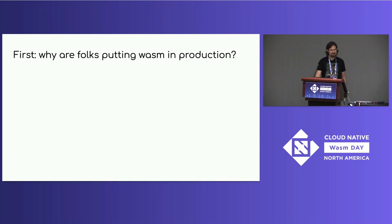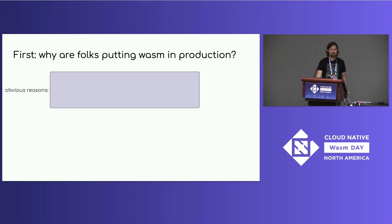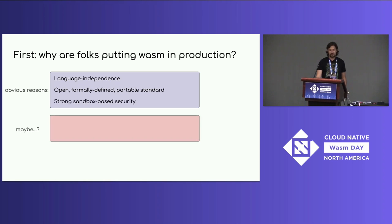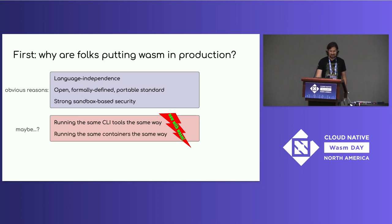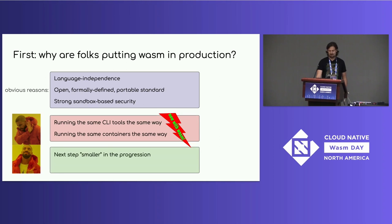Let's step back and ask why people are putting WASM into production. There are obvious reasons: language independence, an open formally-defined portable standard, and strong sandbox-based security. Are we trying to run the same CLI tools or the same containers the same way — just now with WASM as the instruction set? What's motivating us more is taking the next step smaller in the progression from VMs to containers to WebAssembly.